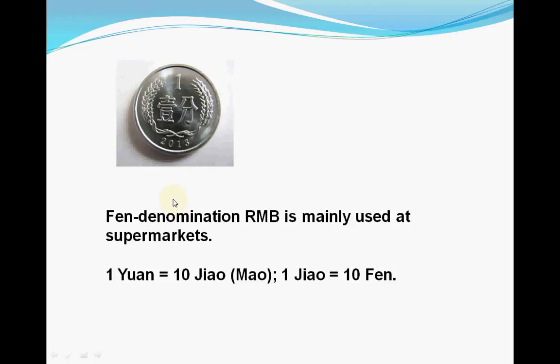The fen denomination of Renminbi is mainly used at supermarkets, because it is such small money that people don't usually use it. One yuan equals ten jiao or ten mao. One jiao or one mao equals ten fen.